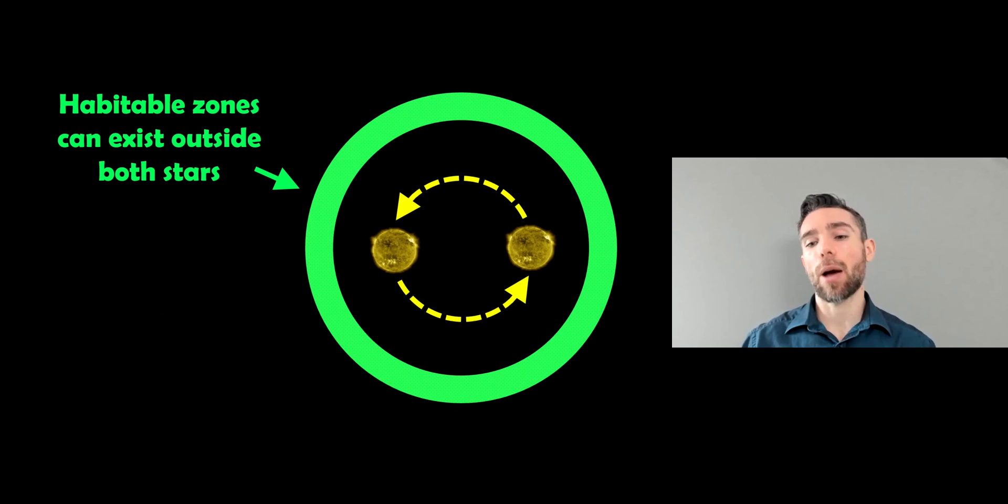So you can get the habitable zone to exist outside both stars. So similar to if you had a single star, if you were around the outside of both stars, you have this habitable zone. So all you basically do is add up the luminosity or the energy given out by both stars, and you then work out where the habitable zone would be for that particular system.